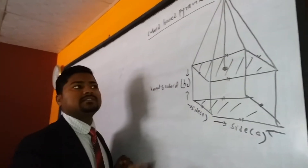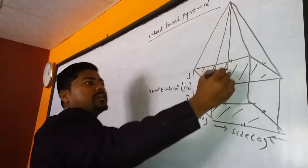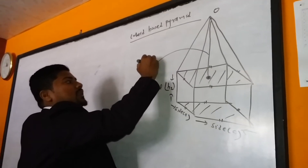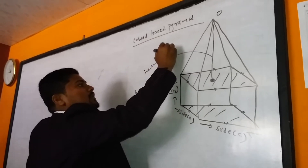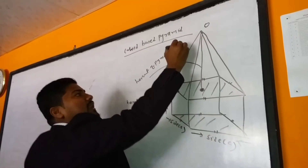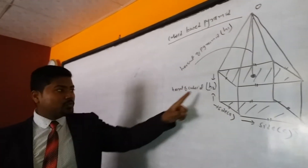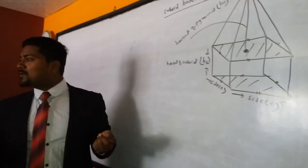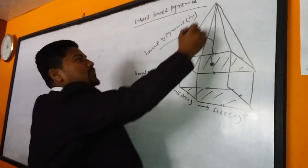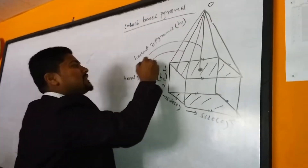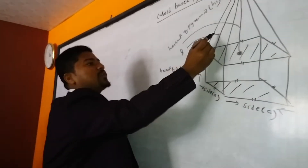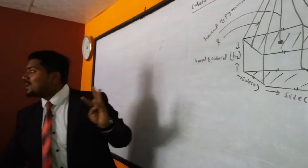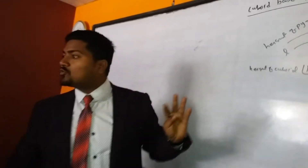From the vertex of the pyramid, a line drawn to the center of the base is called the height of the pyramid, denoted S1. The slant height of the pyramid is denoted L. So we have: S1 = height of pyramid, S2 = height of cuboid, L = slant height, and a = side of base.